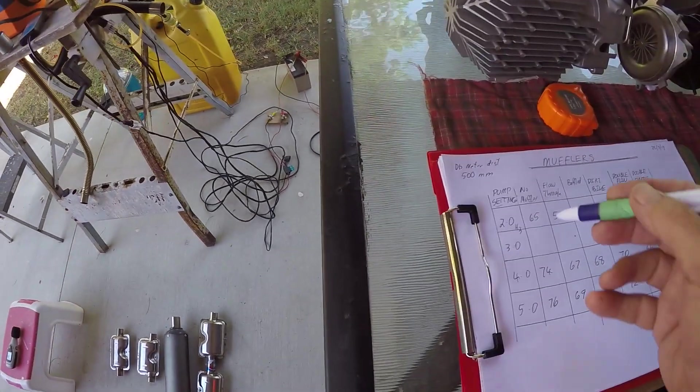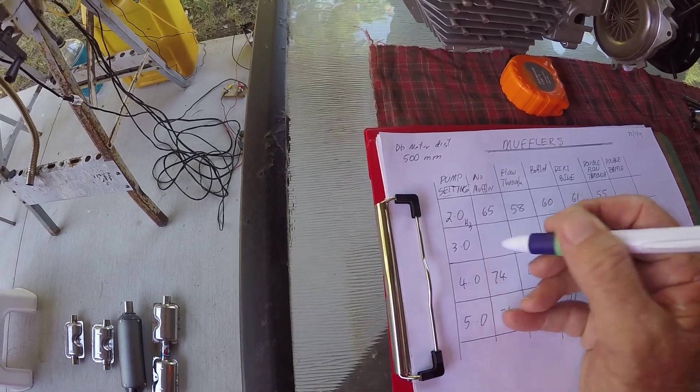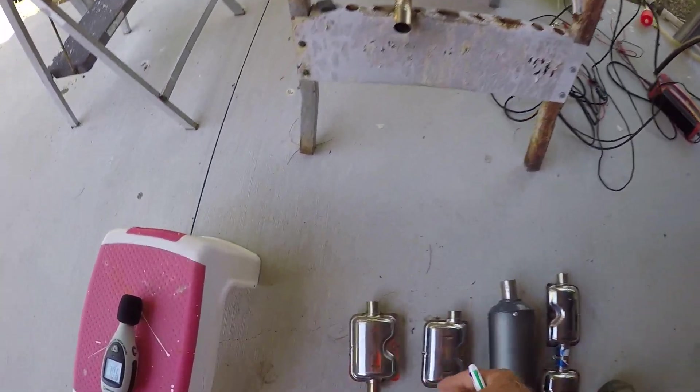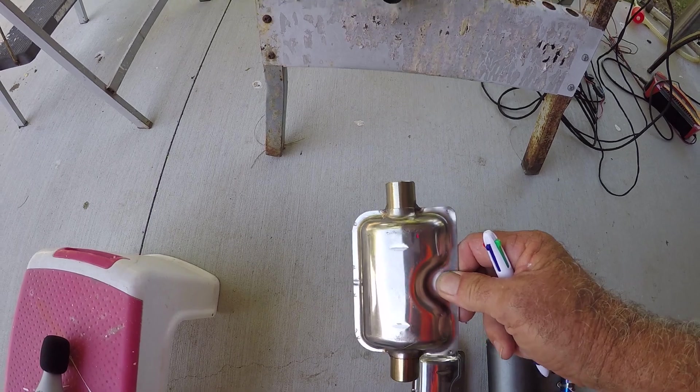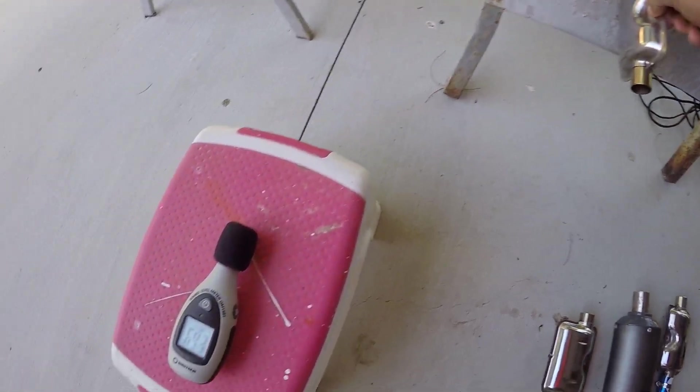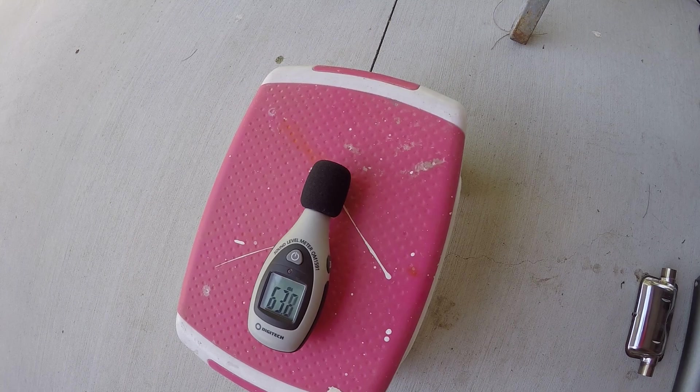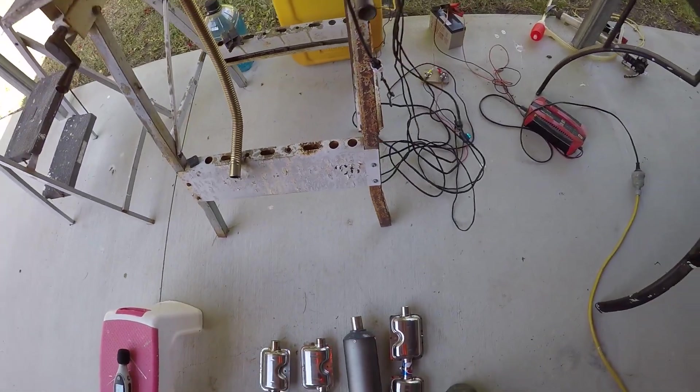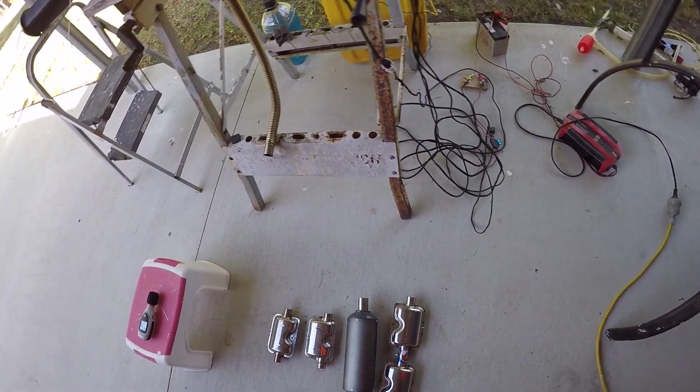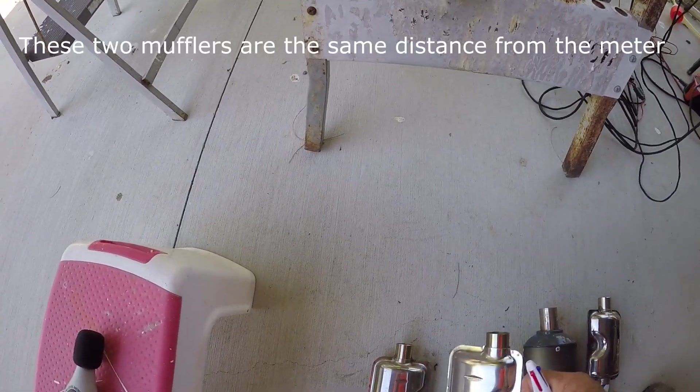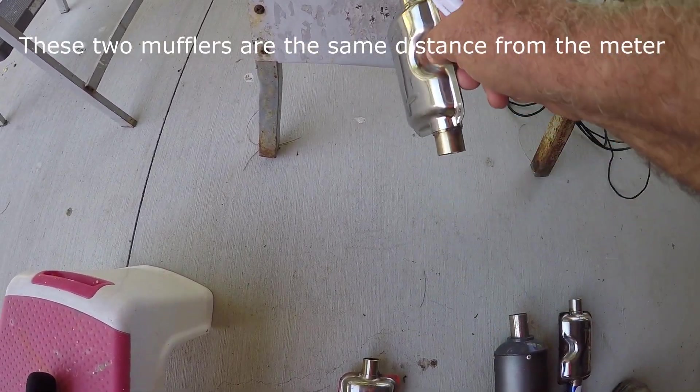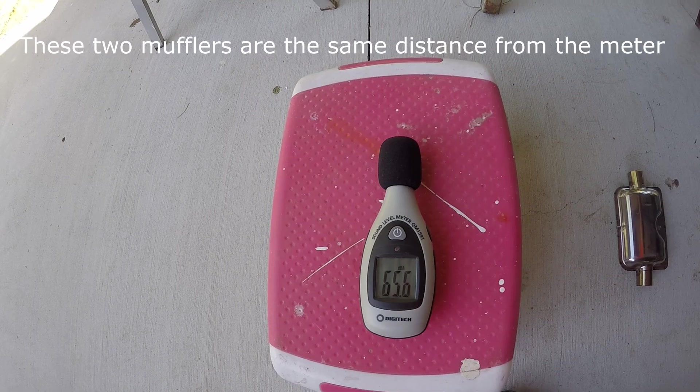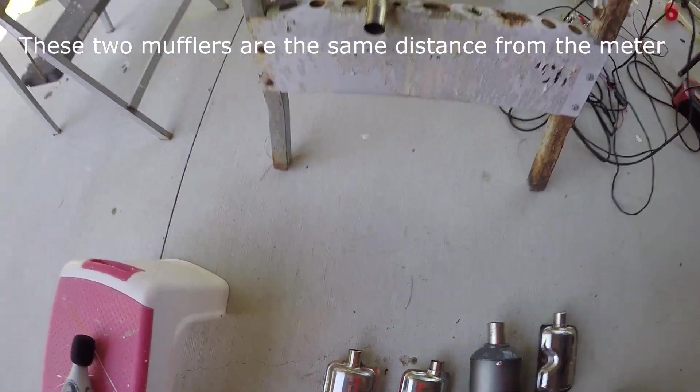Okay we'll call that 71 at three hertz. We're using the flow through muffler, we'll go up and we'll call that 64. The baffled muffler, we'll round it up and call it 66.